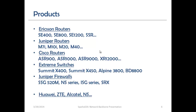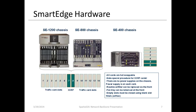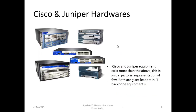This is the Smart Edge hardware. You can see the 1200, 800, and 400 chassis types. The XRP here is the controller card, always located in slots 7 and 8 for the 1200 and 800 chassis, and in slots 5 and 6 for the 400 chassis. This shows the line traffic cards and the controller card. The next slide shows Cisco and Juniper hardware — just a few of the many products they have, including routers and switches. These two vendors are both giant leaders in IT backbone equipment.